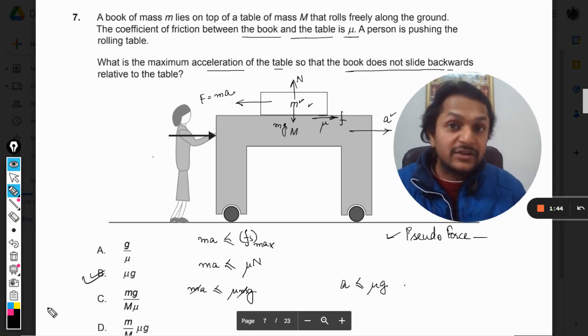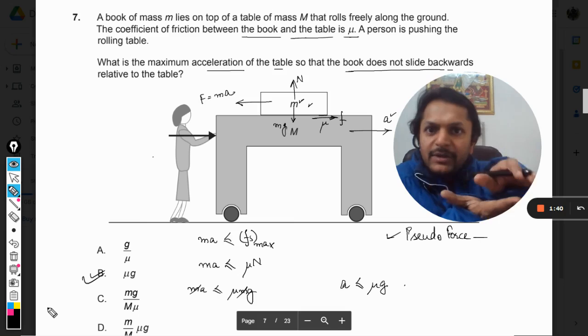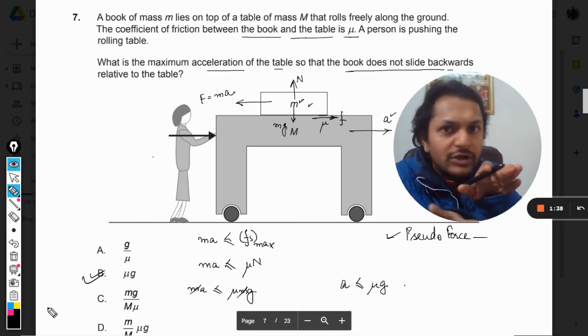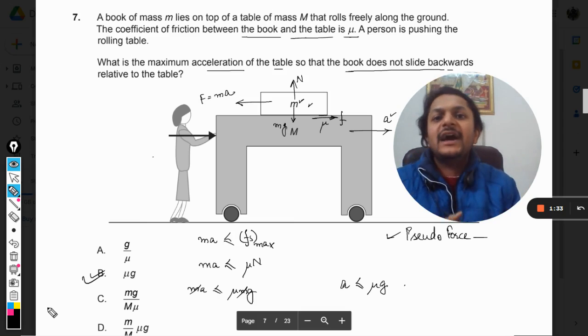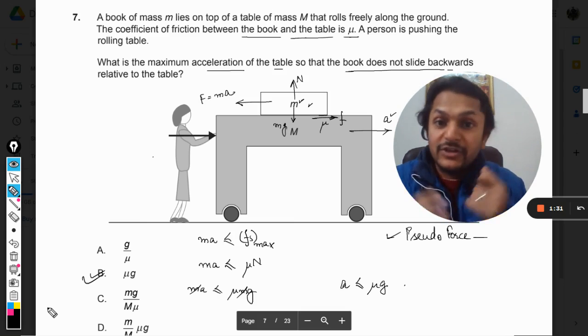If it is less than μg, the book will not be able to slide on the table, so the contact will be there. The book will move with the same acceleration a and keep moving like that. This is how we do this question.